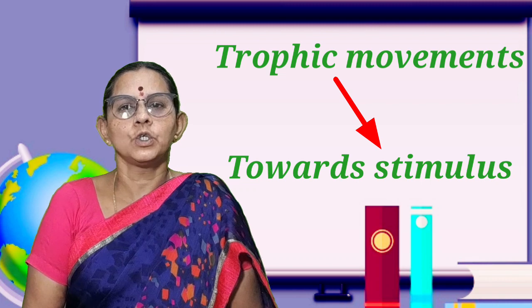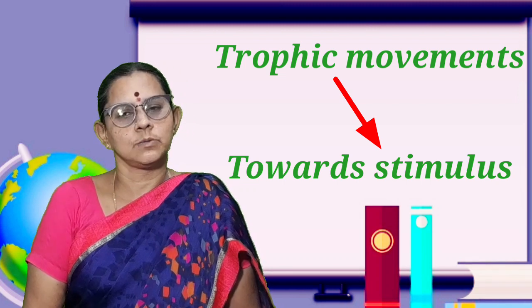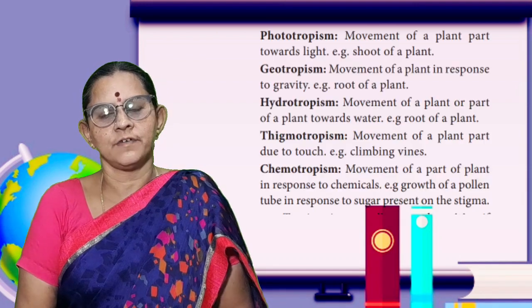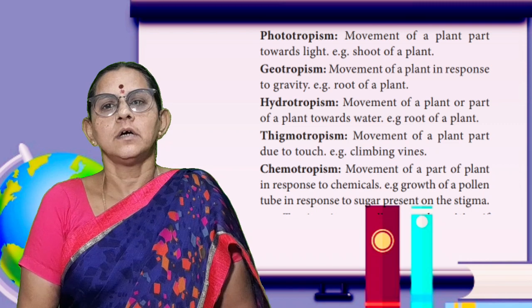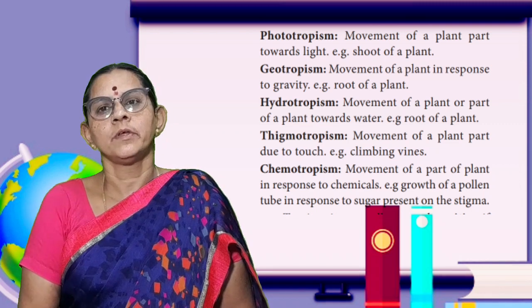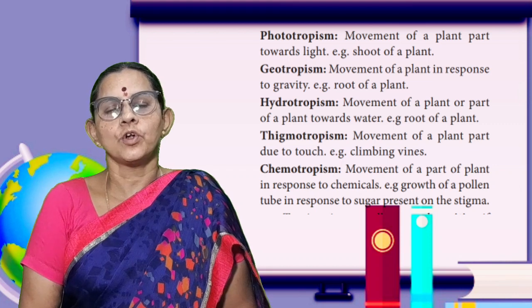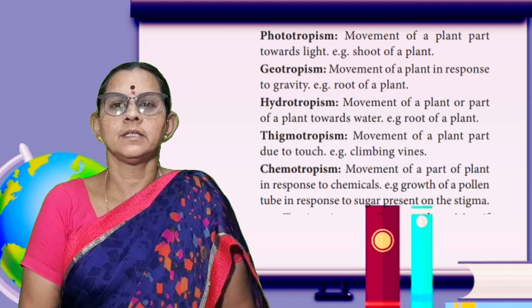Unidirectional movement of a plant or part of a plant towards the stimulus is called tropic movement. There are different types of tropic movements. First is phototropism, then geotropism, then hydrotropism, thigmotropism, and chemotropism — these are five types.